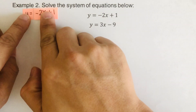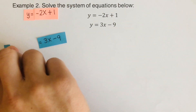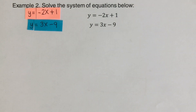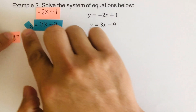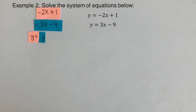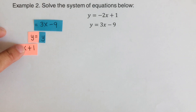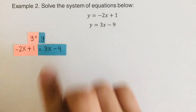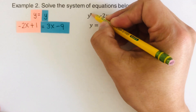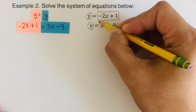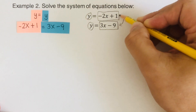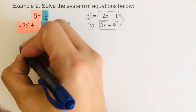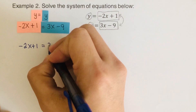I have placed a card here with the equations written on it. The first one is y equals negative 2x plus 1, and the other is y equals 3x minus 9. Both y's are equal to each other, so y equals y. The orange value, negative 2x plus 1, and the blue value, 3x minus 9, are equal to each other since both equal y — that's what we mean by the equal values method. So the first step is to equate both sides: negative 2x plus 1 equals 3x minus 9.